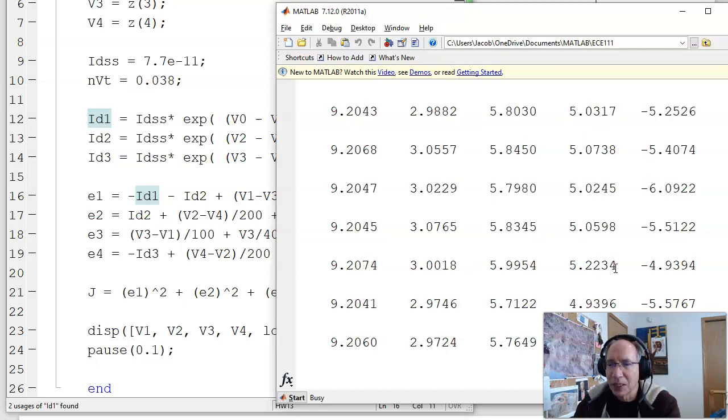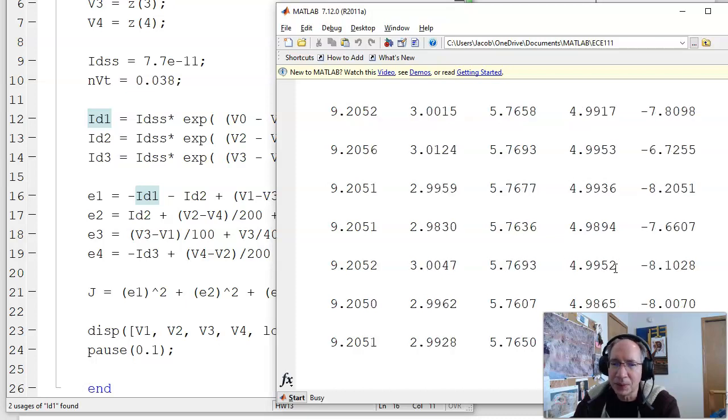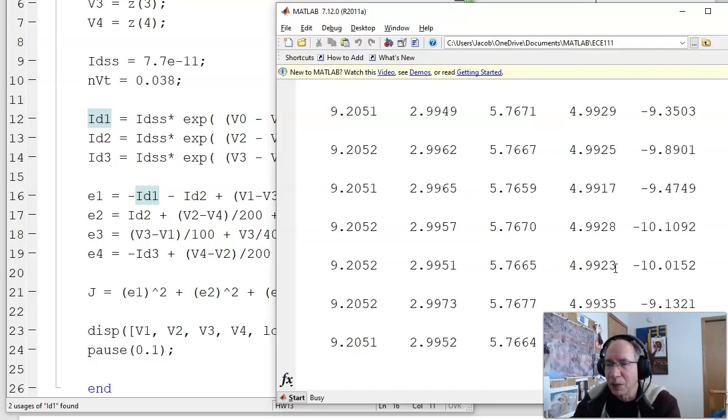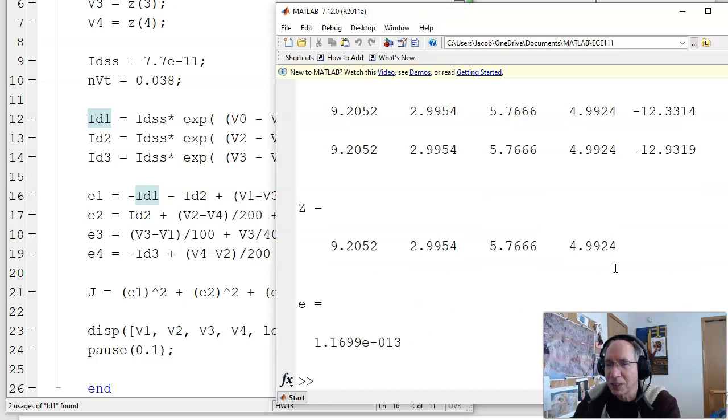But now it's getting better. It takes a while, again, because my initial guess was so bad. Now I'm at 10 to the minus 9 for the error. 10 to the minus 10. 10 to the minus 11. And maybe that's the answer. Maybe not.